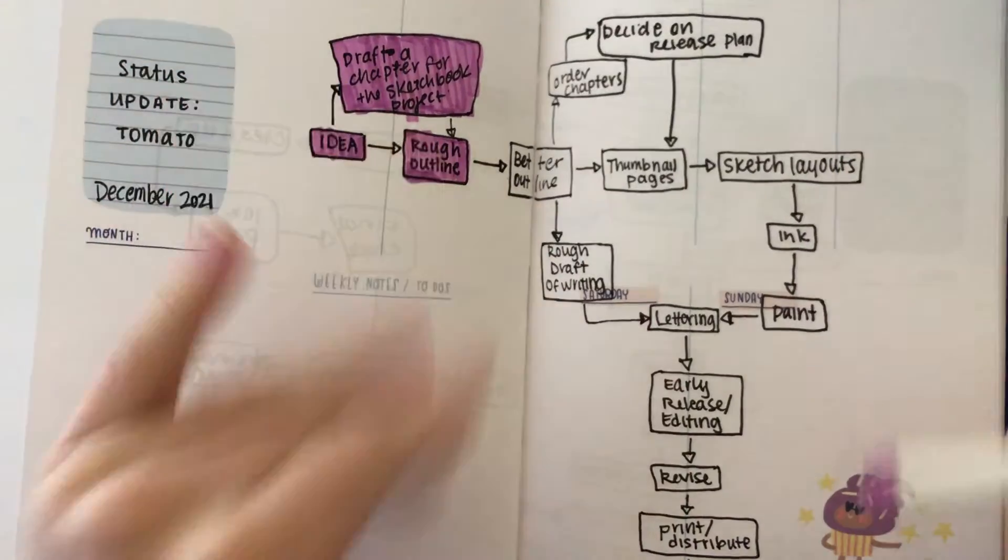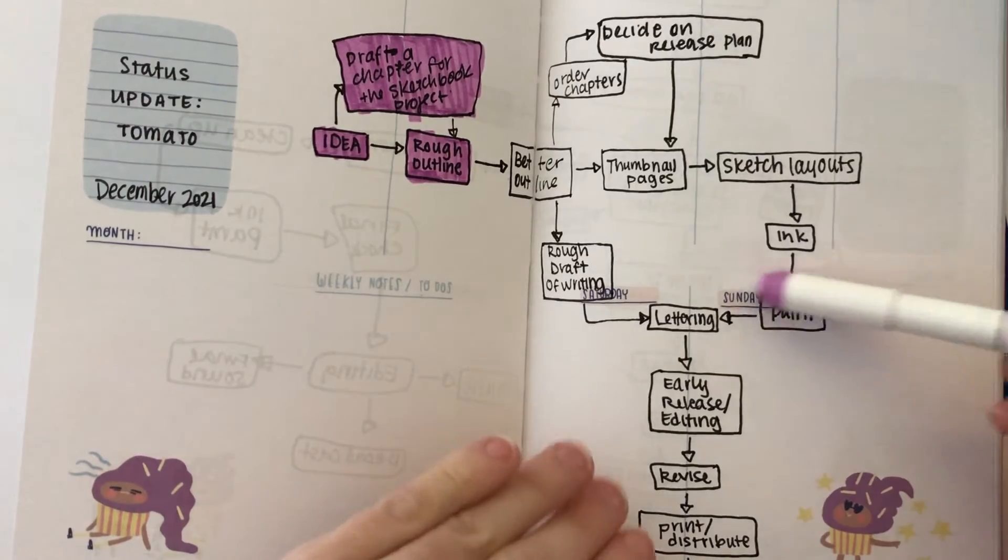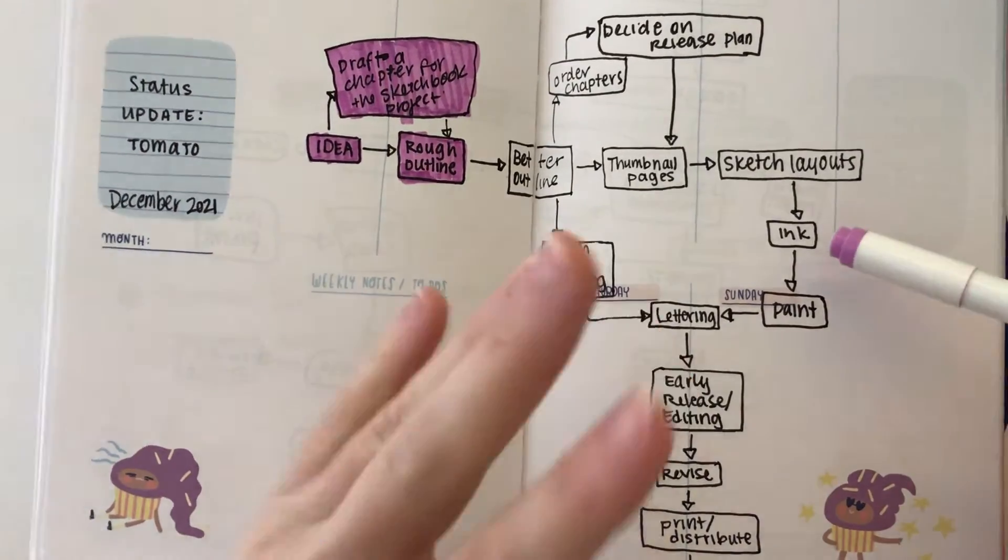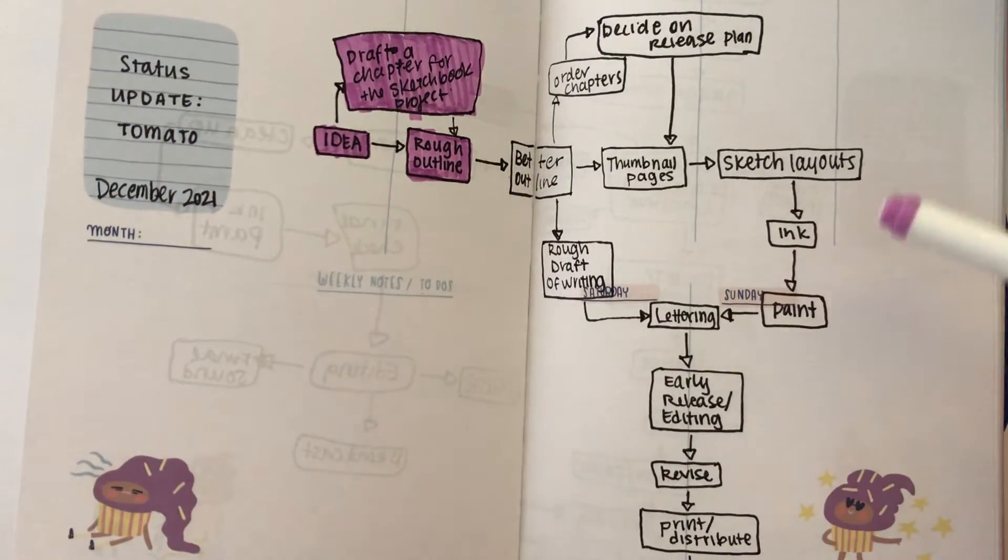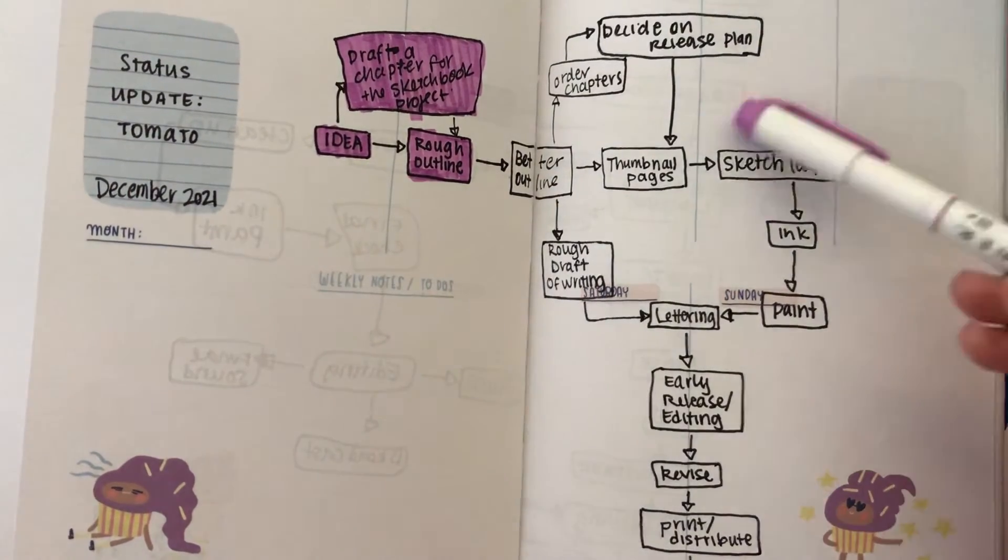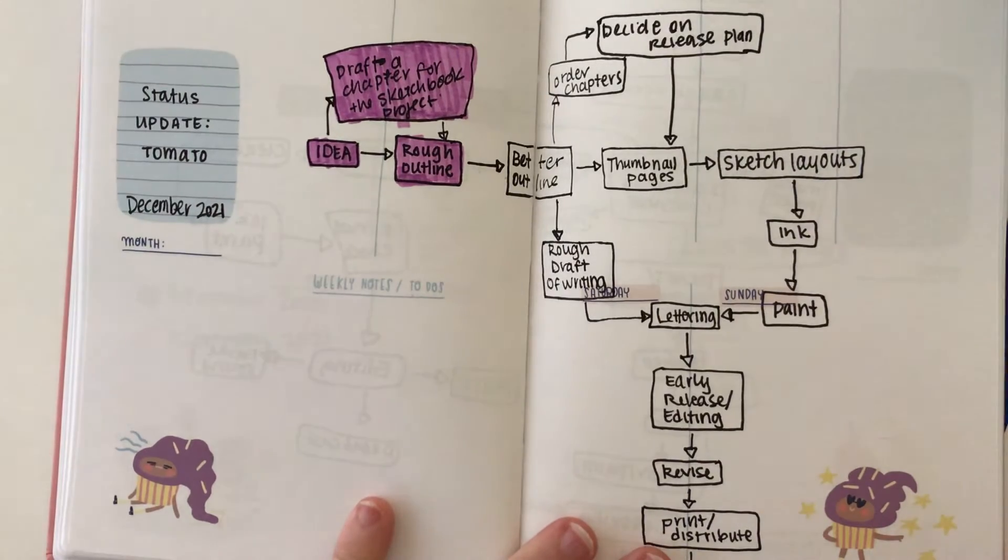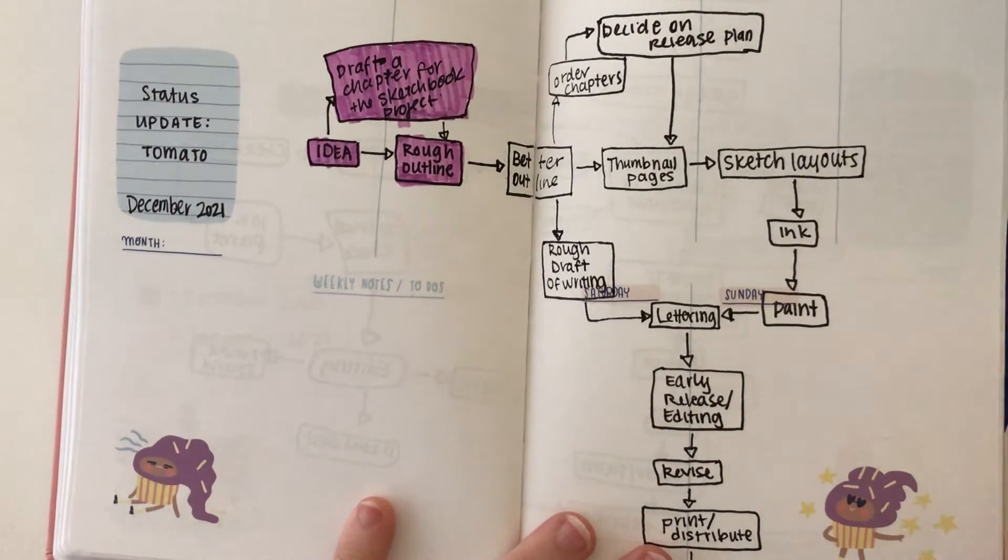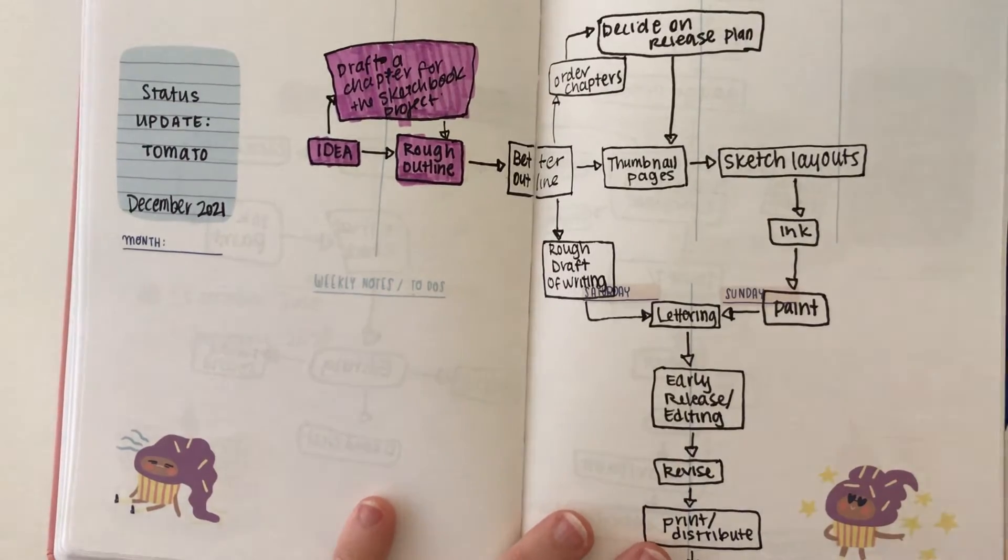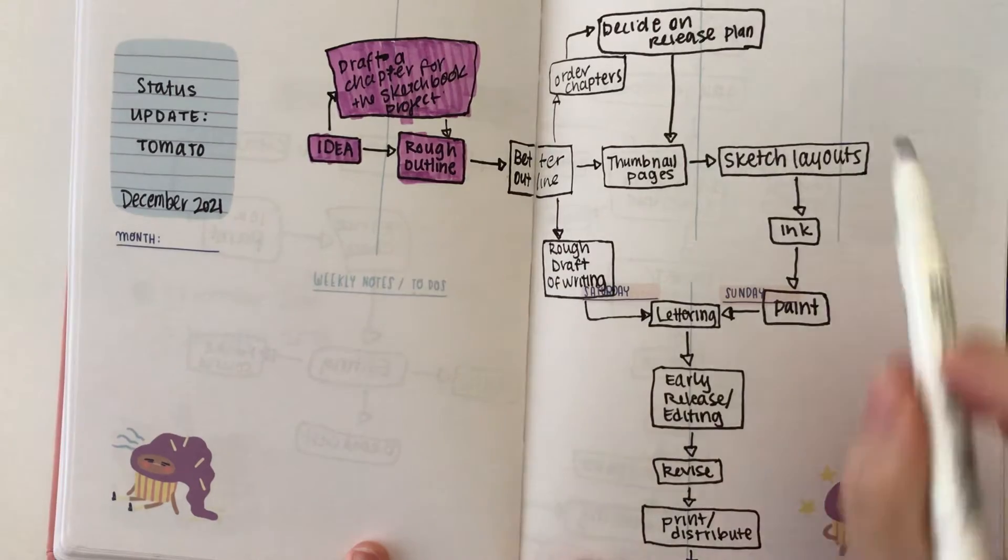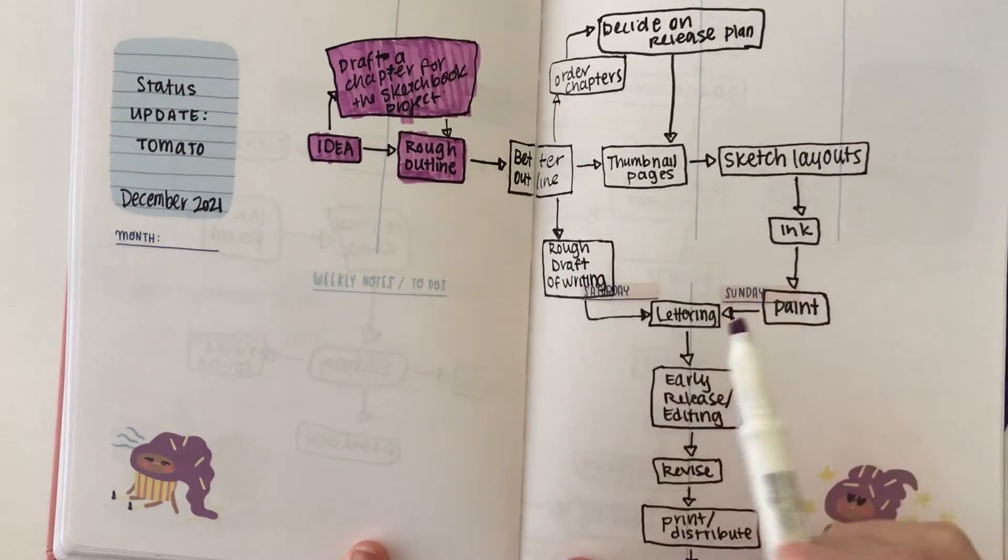So after I thumbnail the pages the plan is to go back and sketch in the layouts, do the inking, do the painting. This I'm all doing digitally, but I still think in those layers. You know, you have your rough sketch and then you go back through and do the outlining, kind of the lines that will follow, and then you do the layer of color. So I think it's going to follow that.